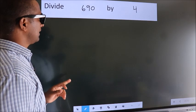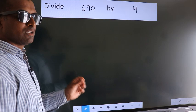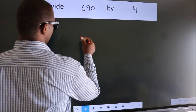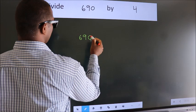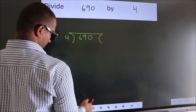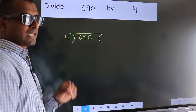Divide 690 by 4. To do this division, we should frame it in this way: 690 here, 4 here. This is your step 1.